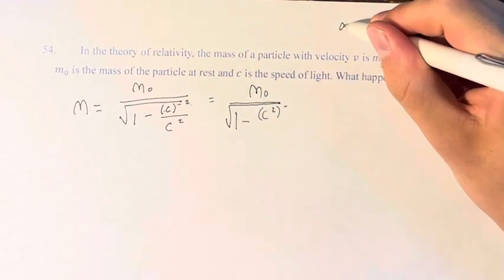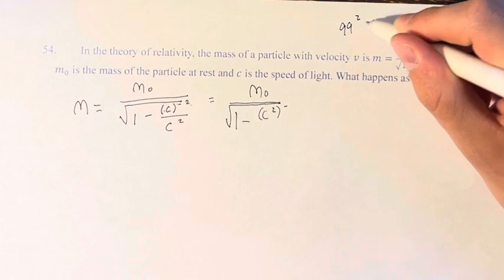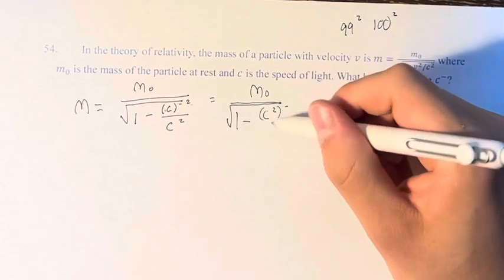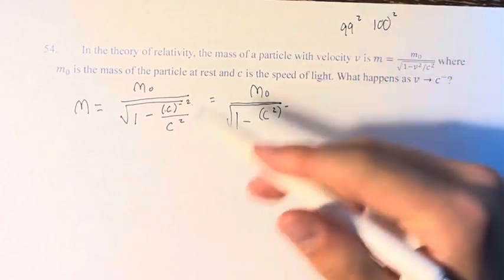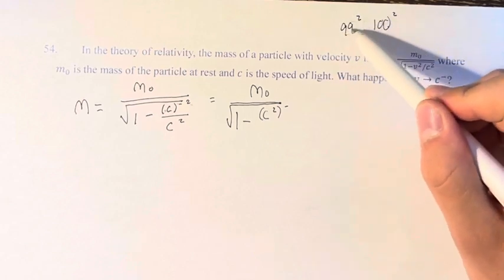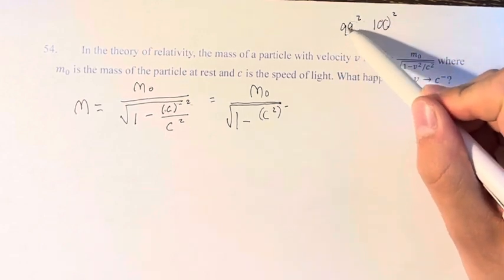In the same way that 99 squared is very close but less than 100 squared. As we get closer and closer to 100, we're going to get closer and closer to 100 squared.